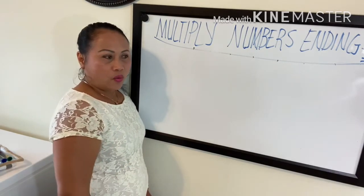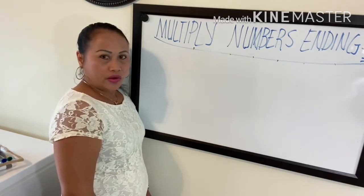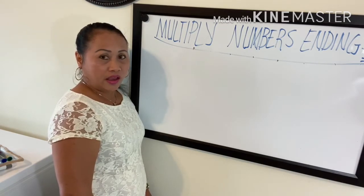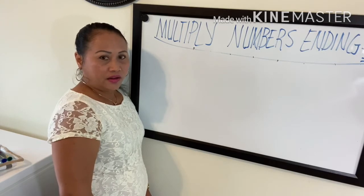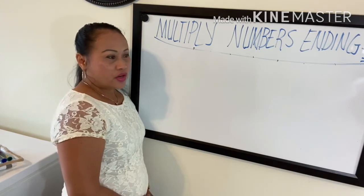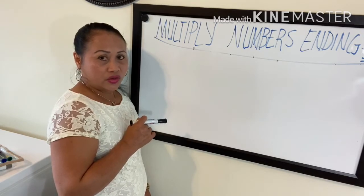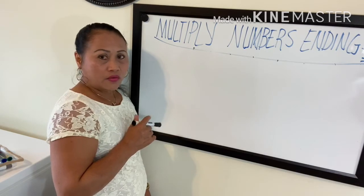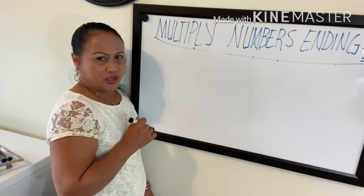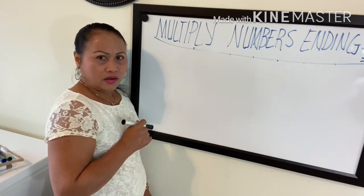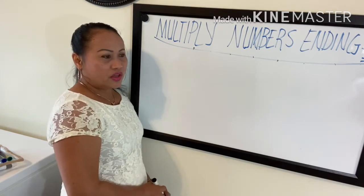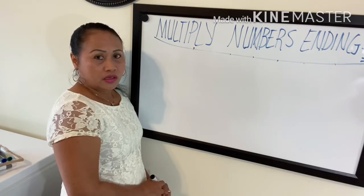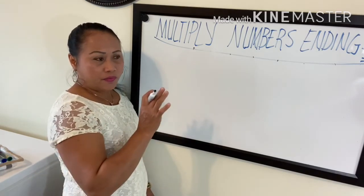The first digits can be 1-1, 2-2, 3-3, 4-4, 5-5, 6-6, 7-7, 8-8, or 9-9 — you can change the first digit, but the top and bottom first digits must always be the same. The second number is always five — it's constant and never changes.